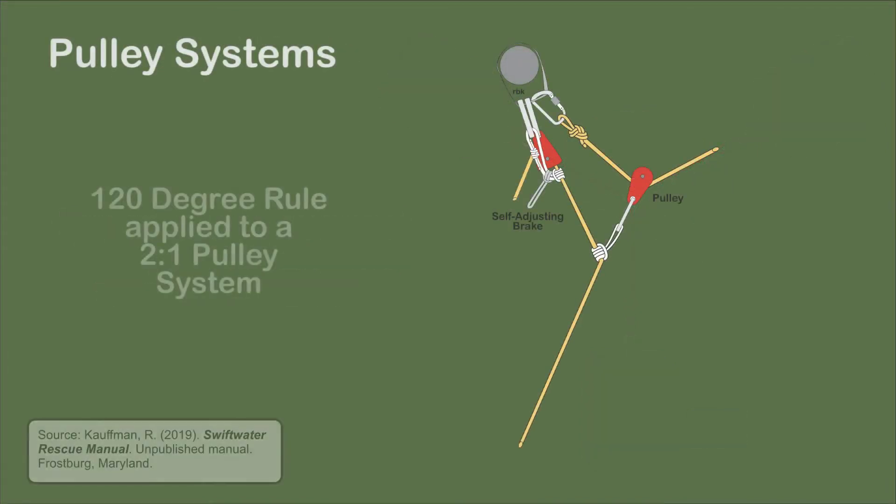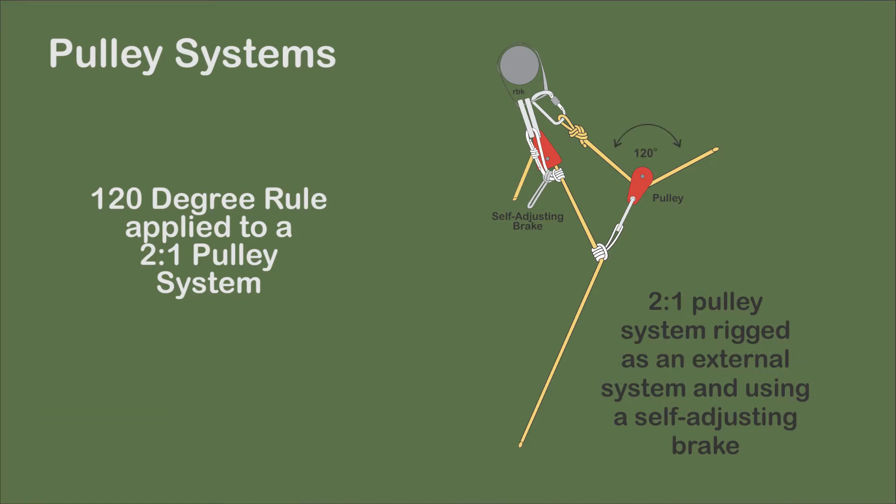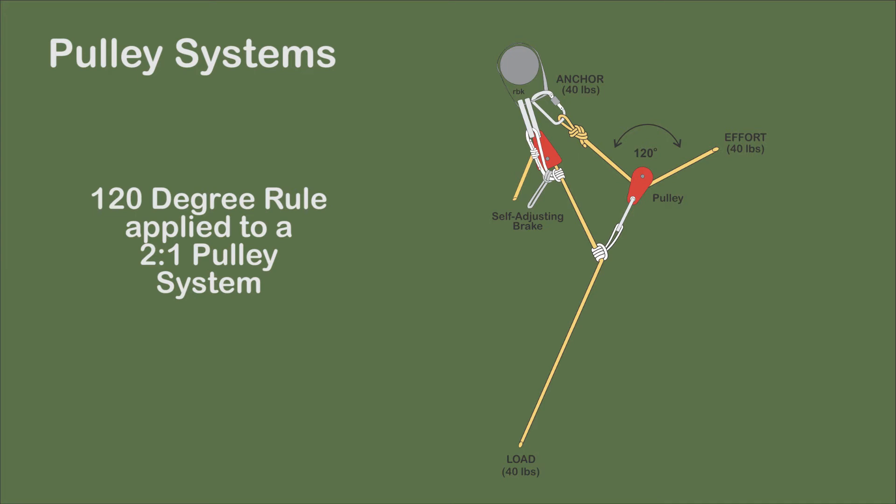The 120 degree rule applies to other situations. In pulley systems, when the angle between the anchor and the effort is 120 degrees, the force on the anchor, effort, and load are all the same. The result is that there is no mechanical advantage.